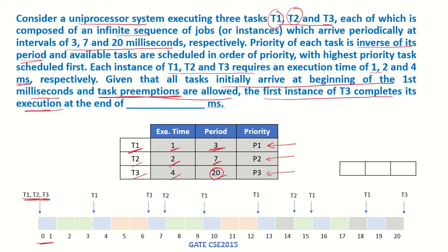Let's start solving this. At time unit 0, all three tasks are there, but since T1 has the highest priority, T1 will be scheduled first and it has an execution time of only 1. So it runs for 1 time unit and it goes out of the system and will return again at 3, then 6, and so on.